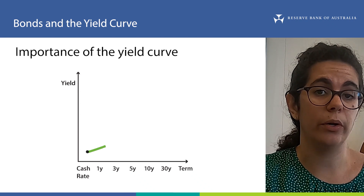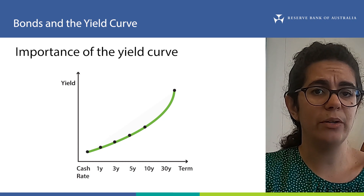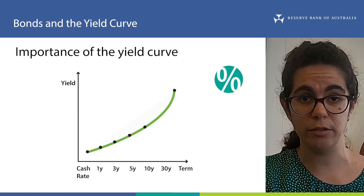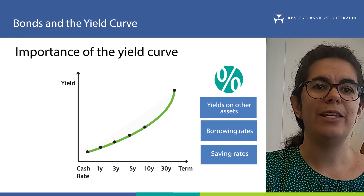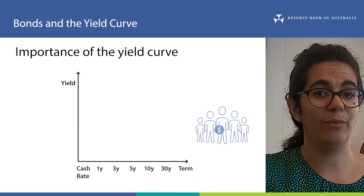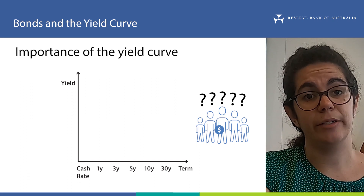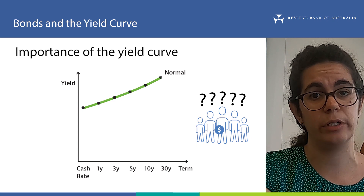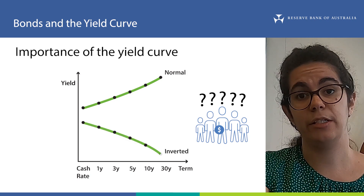So why is the yield curve important? It provides a crucial link between monetary policy and other interest rates in the economy, serving as a reference point for setting a broad range of interest rates — from yields on bonds and financial assets to borrowing rates for households and businesses, down to interest rates on savings accounts. The yield curve provides a useful summary of what the many buyers and sellers of government bonds expect risk-free interest rates to be in the future, how uncertain they are about those expectations, and how they expect the economy to perform. For example, a normal yield curve might indicate investors expect interest rates to rise, while an inverted yield curve tells us investors expect interest rates to fall.